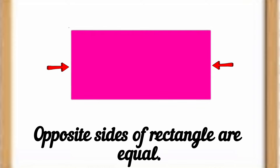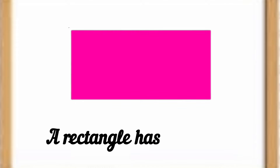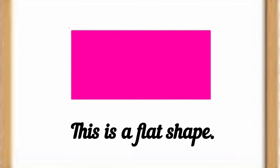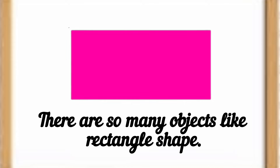Opposite sides of a rectangle are equal. Our rectangle has four corners. This is a flat shape.